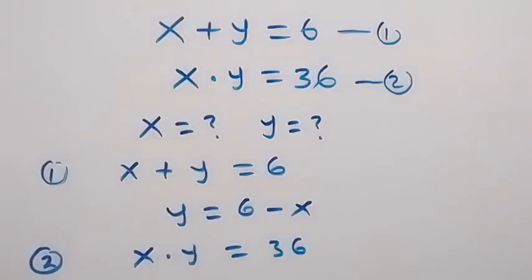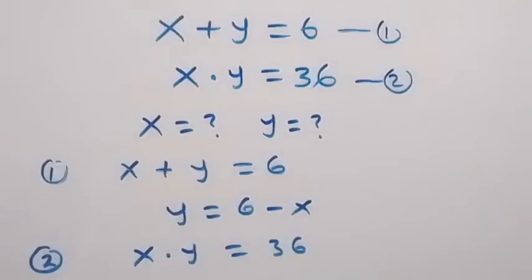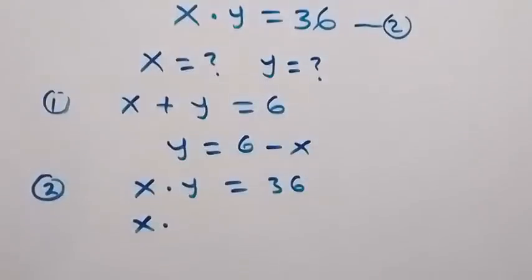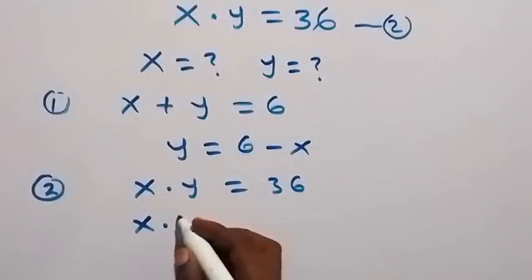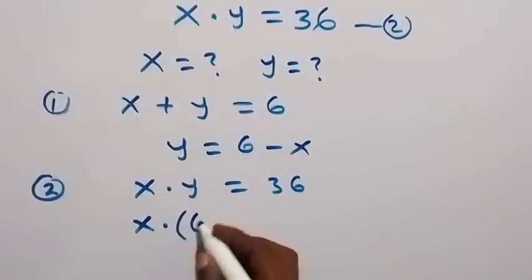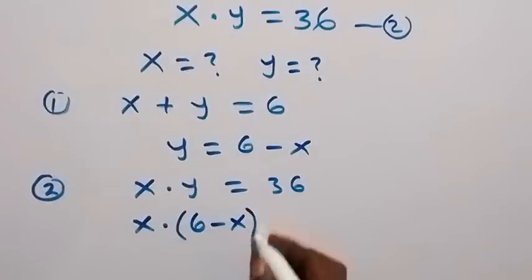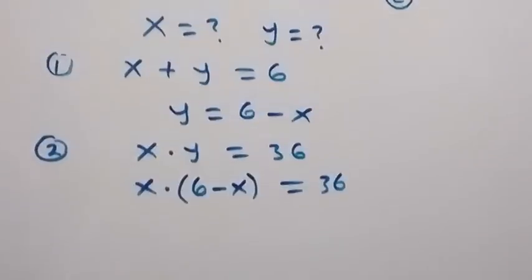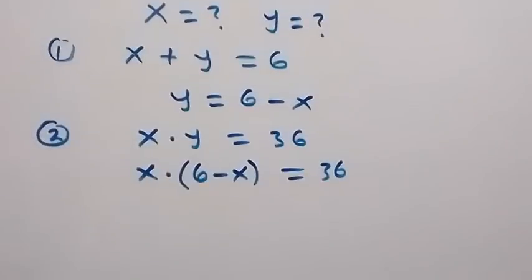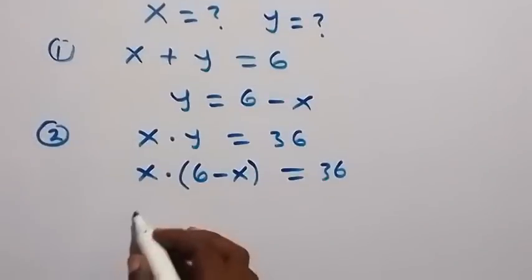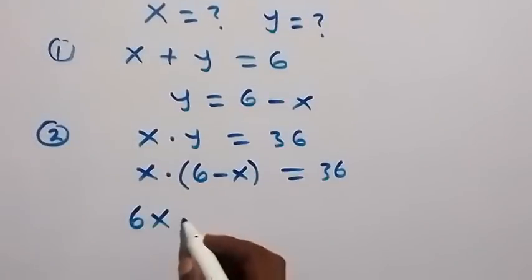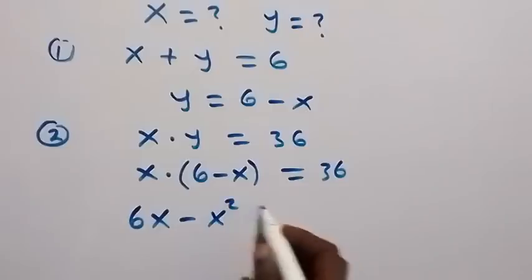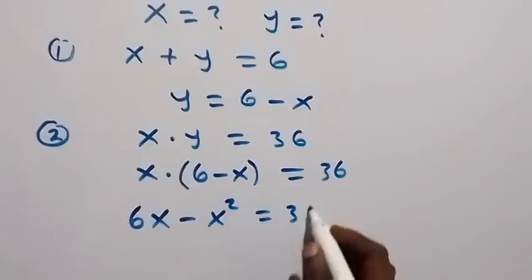And here, we have y replaced by 6 minus x. So we now have x times 6 minus x will then be equals to 36 from here. Then we open this bracket with x.